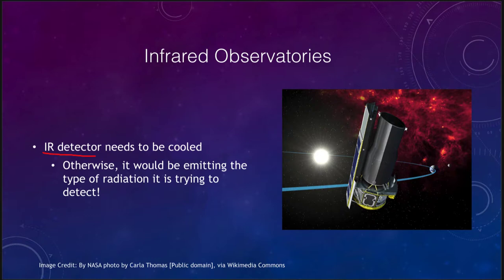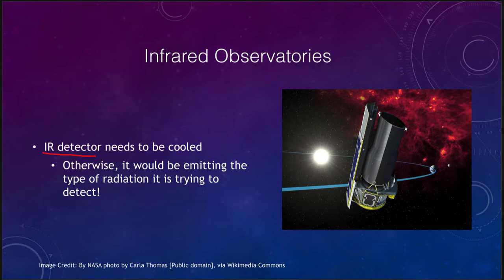If the detector is warm, it could essentially be glowing in the very light it is trying to detect. Imagine your CCD glowing in visible light — you would not be able to see anything because you'd be overwhelmed by that light. The same thing happens here if your infrared detector is not cooled using something like liquid nitrogen to bring it down to really cold temperatures so that it does not emit much infrared. This is one of the big problems with infrared observatories that radio or optical telescopes generally do not have to worry about, since mirrors and CCDs do not give off visible light.